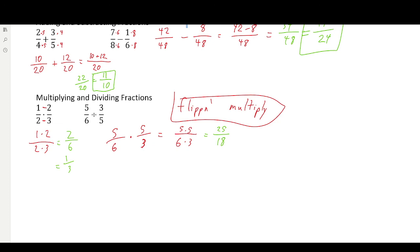Which would give us 25 over 18. And can that be simplified? No, it can't be simplified. So that would be our final value.